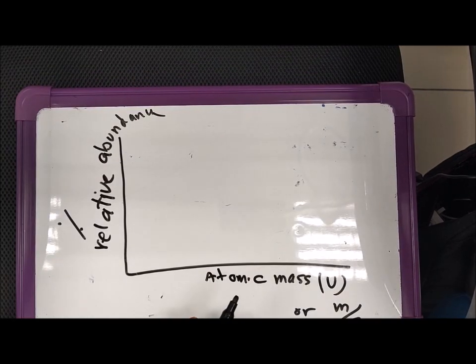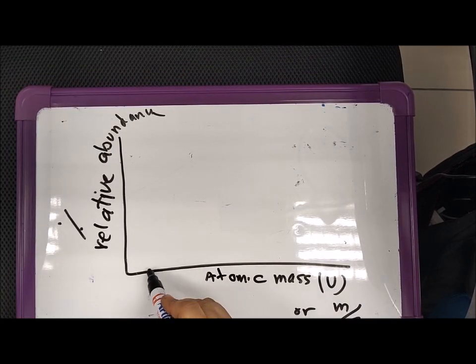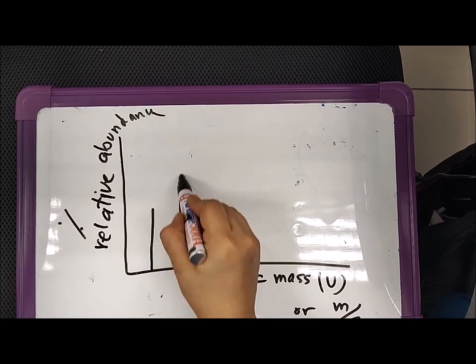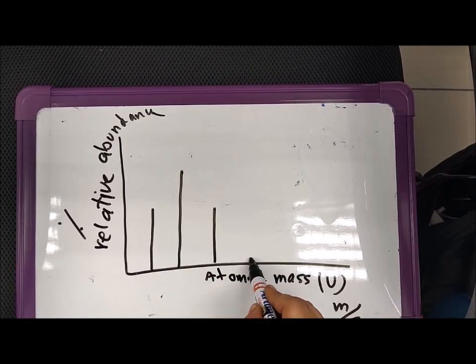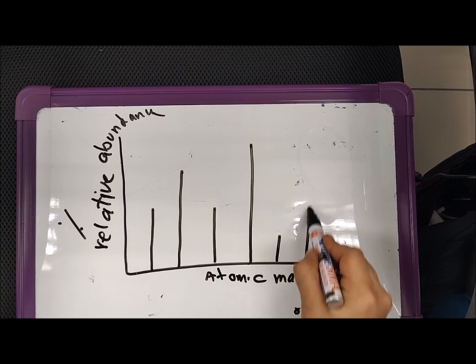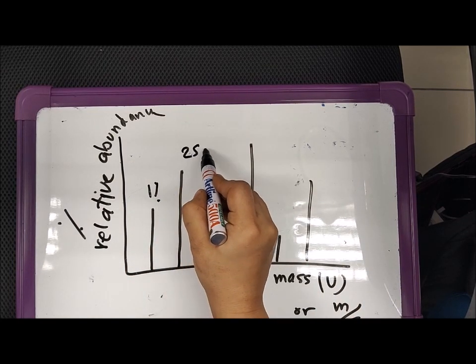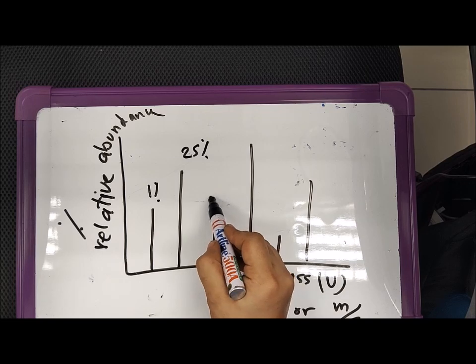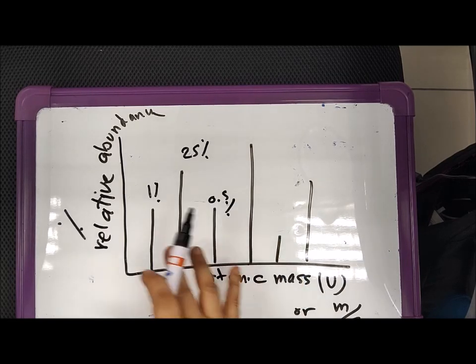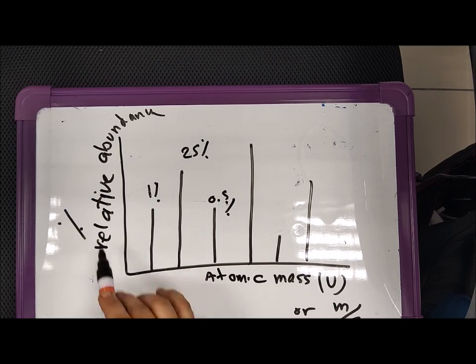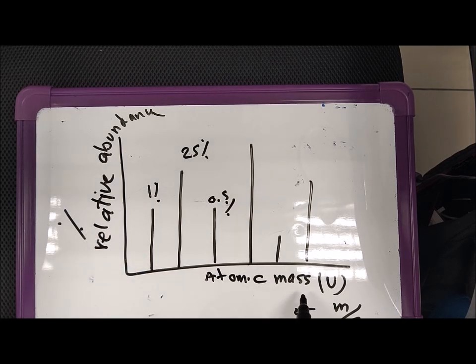On this kind of graph, you can find abundance, like the stick-log graph. It shows, for example, 1%, 25%, or 0.5%. The percentage of the abundance, relative abundance will be shown, and also the atomic mass is shown, or it will be shown by mass over the charge of the atom.